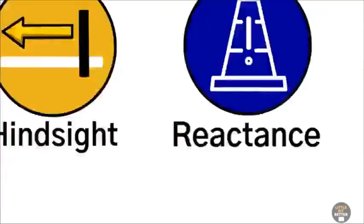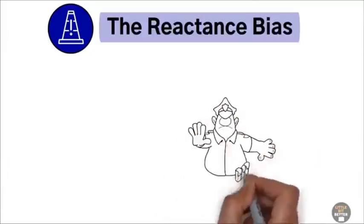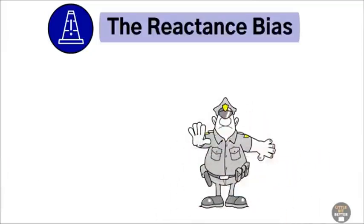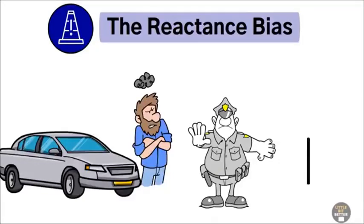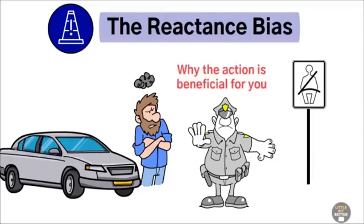The reactance bias. The reactance bias is when you want to do the opposite of what you're told because you feel your freedom is being threatened. Like not wanting to wear a seatbelt just because a sign says you must. To avoid this, focus on why the action is beneficial for you, not because you're being told to do it.